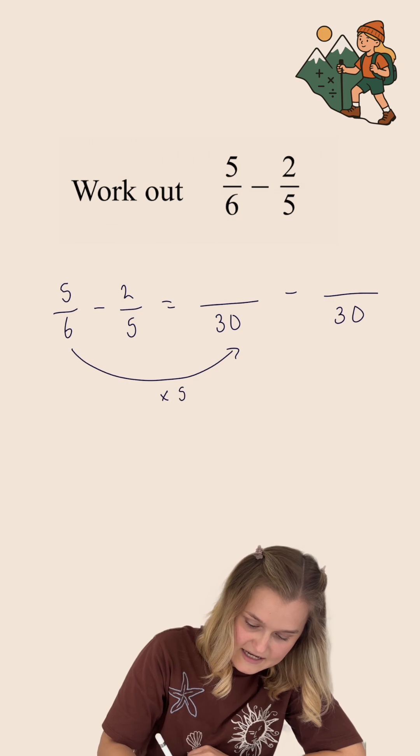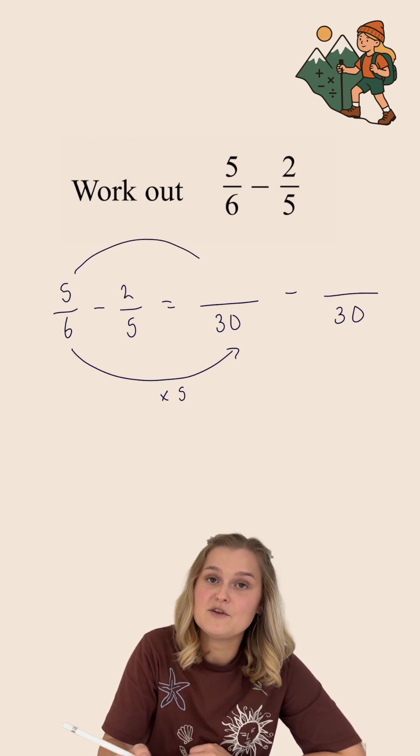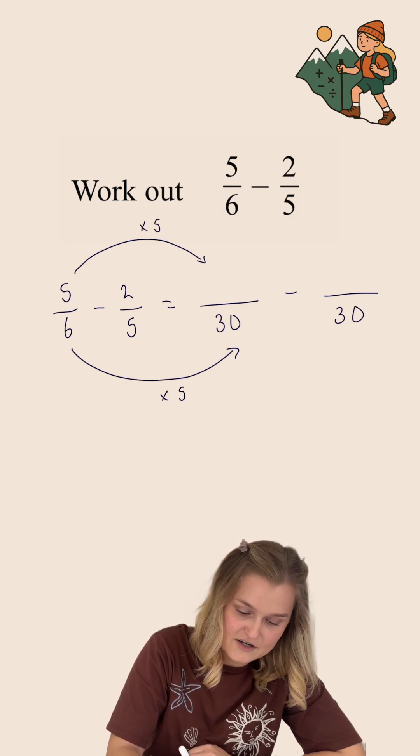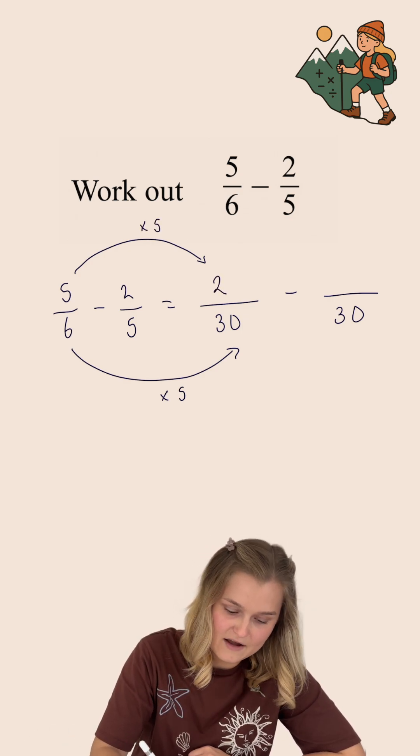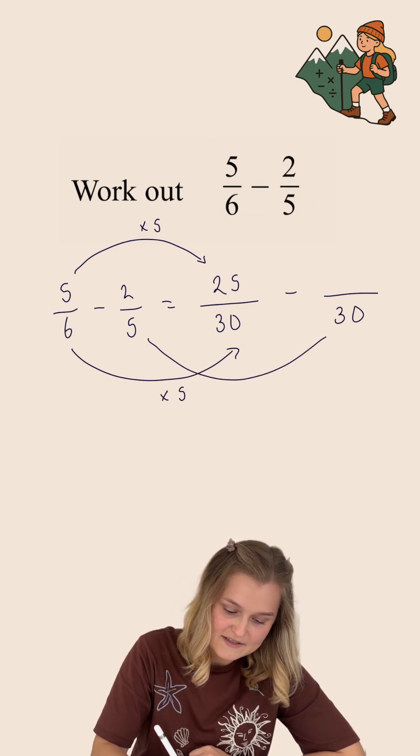Now, to get from 6 to 30, I've multiplied by 5. Whatever you do to the bottom of a fraction, you have to do to the top. So I'm also going to multiply the top of the fraction, or the numerator, by 5. 5 times 5 is 25. And then for the second fraction,